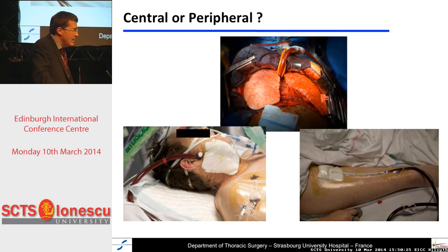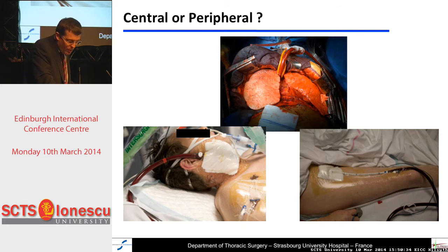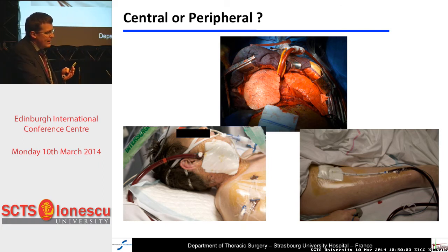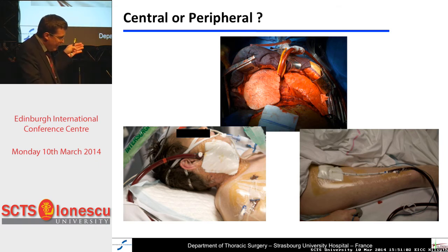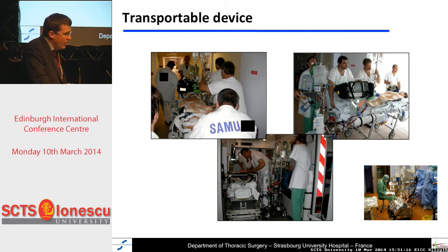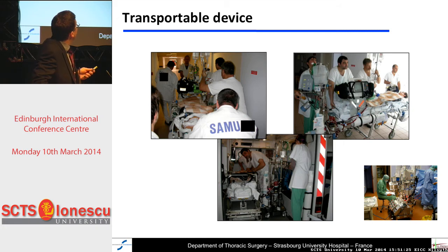Another question is should we use a central or a peripheral approach? The answer is rather simple: each time you can, you have to use a peripheral approach, which is easier to implant and also easier to explant. Sometimes, as in the case of primary graft dysfunction, you have to use a central approach. But the consensus is to use a peripheral, percutaneous approach as much as possible. One of the particularities of ECMO is that it has to be a transportable device, and there are pictures here showing transport from another hospital to ours and finally to the OR.